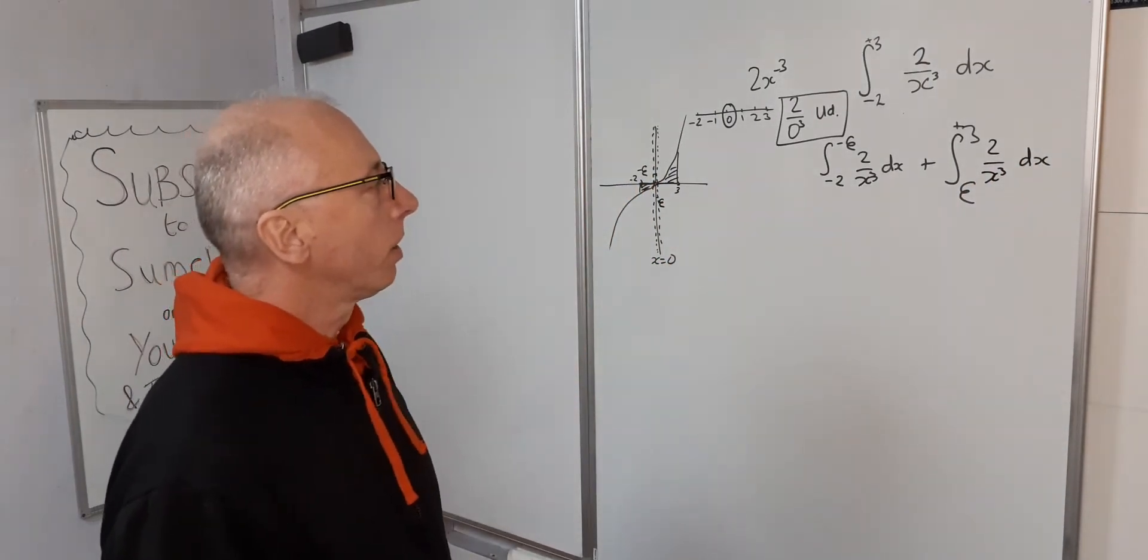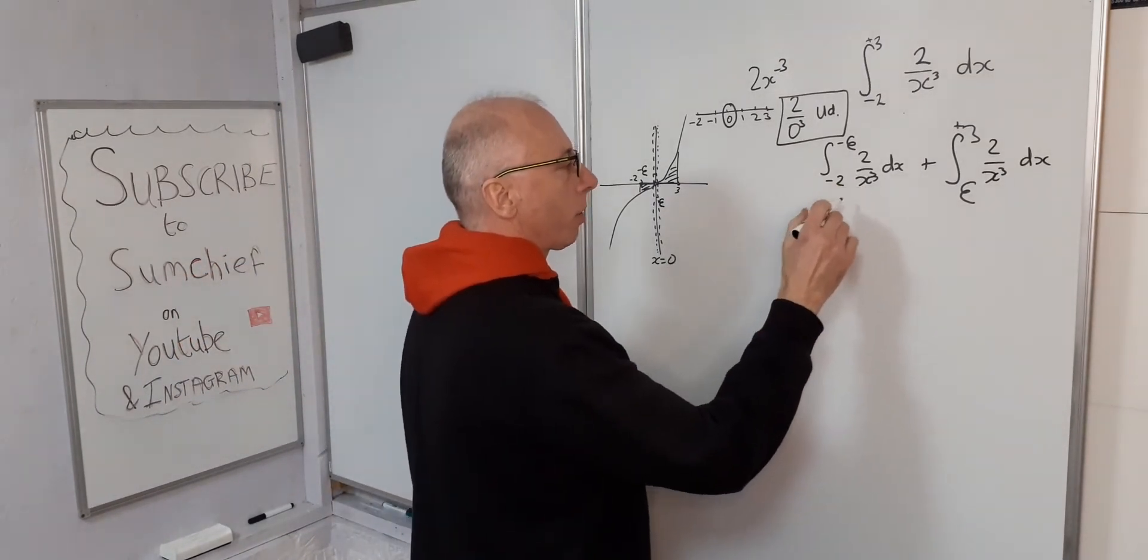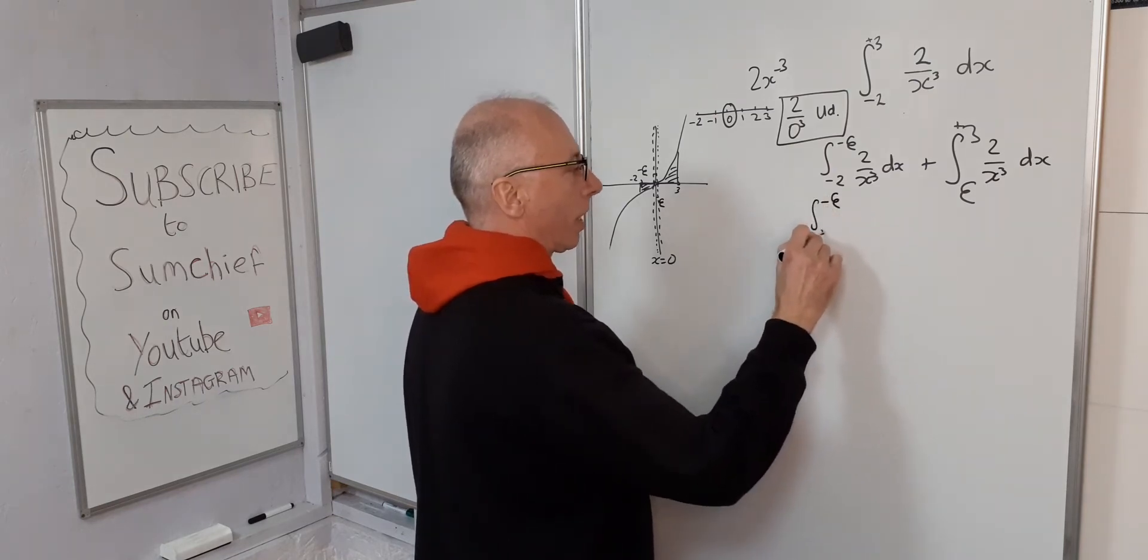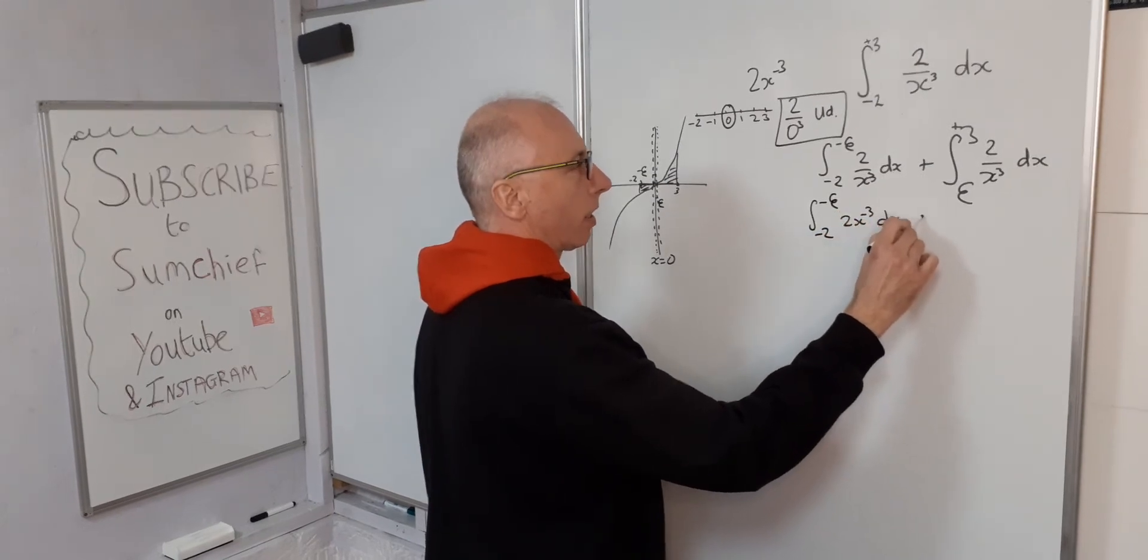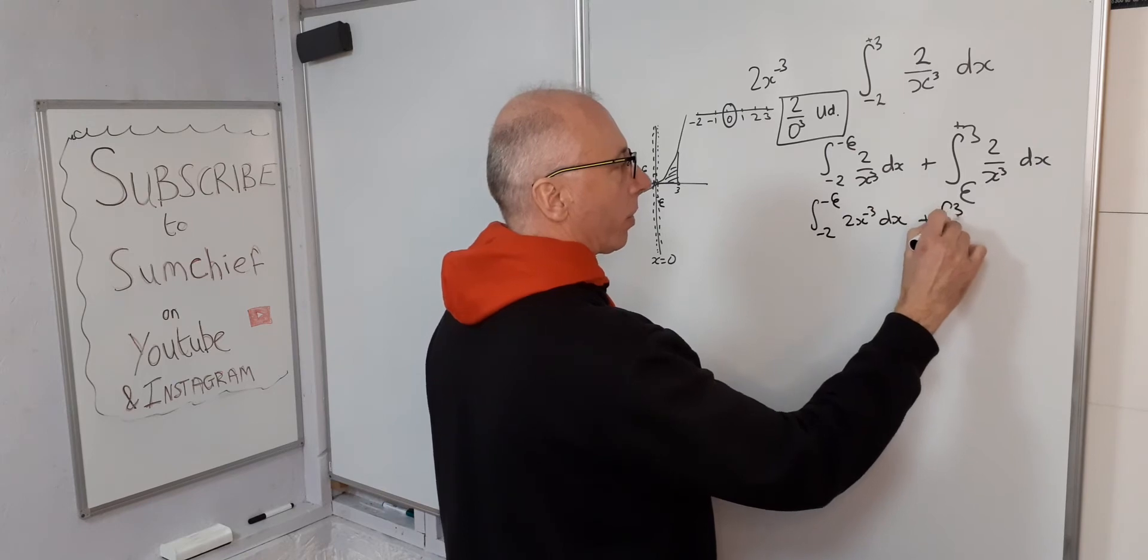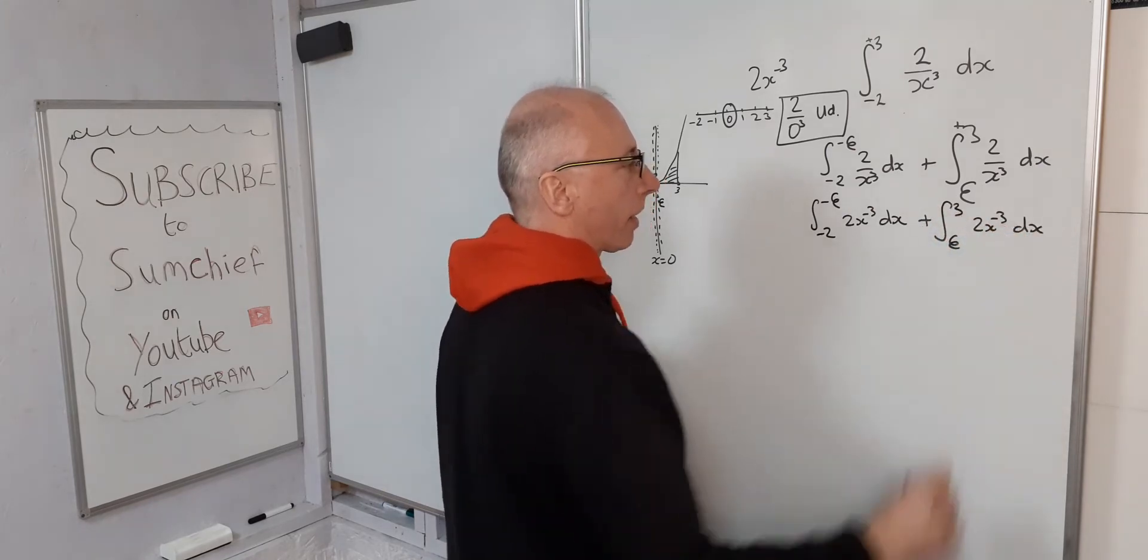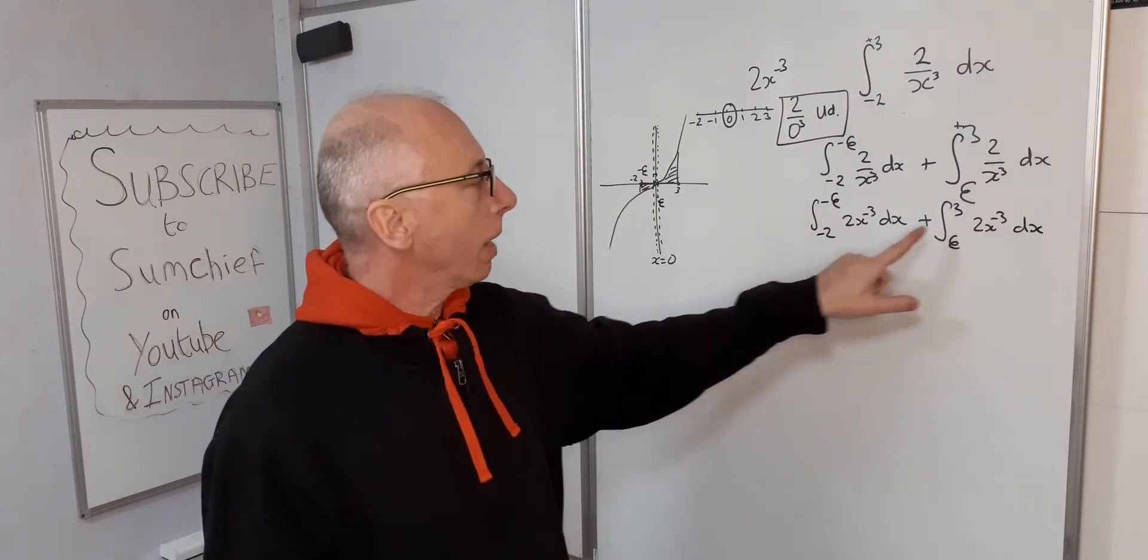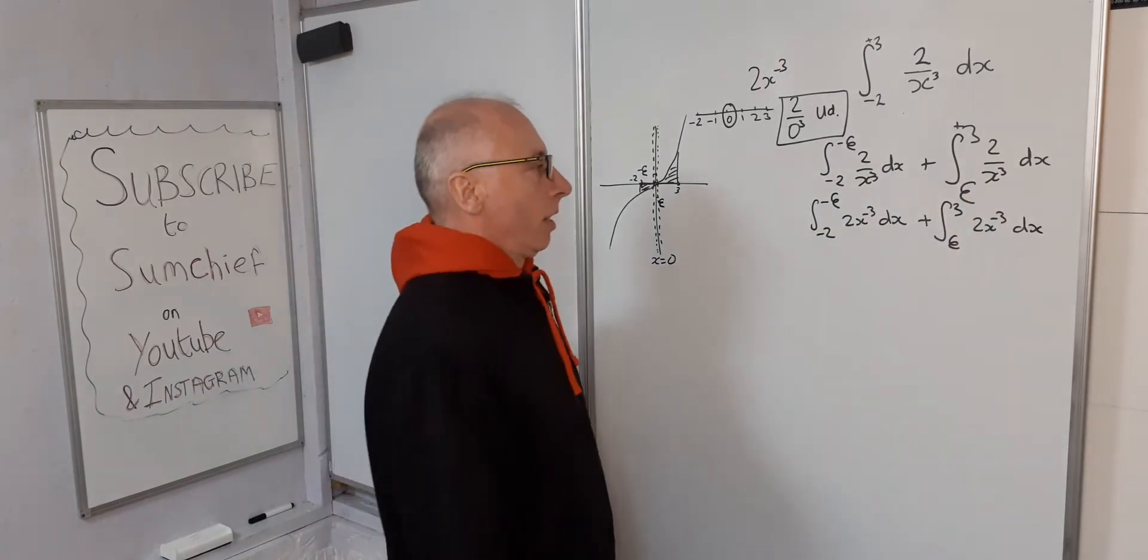Okay, right, so now we can integrate. Integral negative epsilon to negative 2 of 2x to the minus 3 dx plus integral epsilon to 3 of 2x to minus 3 dx. So when integrating I always find it's easier to get this negative power in there rather than trying to deal with fractions.